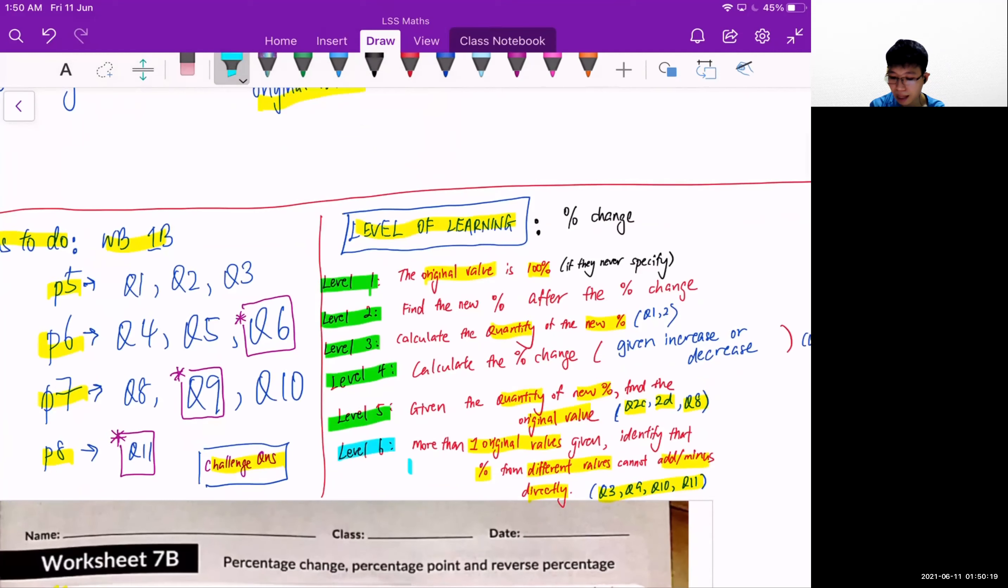For level 6, there are more than one original values given in the section. That means there are a few values representing different things. So all of them are 100%, and you need to identify that the percents from different values cannot add or minus together.